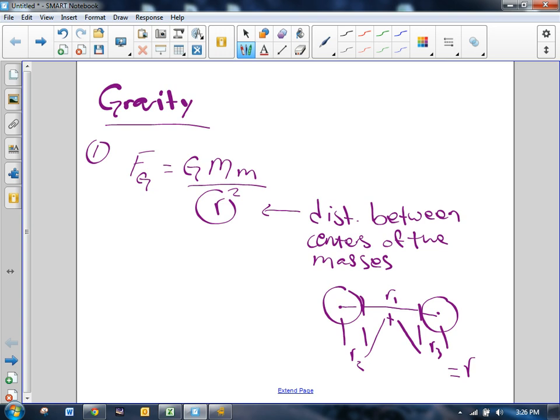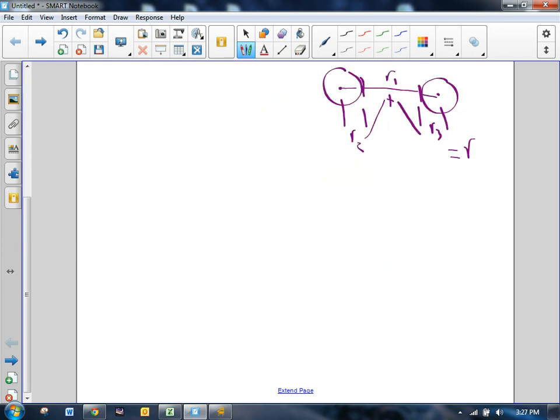G, we know, is the gravitational constant. This number is always going to be the same, 6.67 times 10 to the negative 11th. And it's newtons times meters squared per kilograms squared. And this part of the term is all going to cancel, so you don't really have to worry too much about it. But you do have to worry about the number, you have to know it.